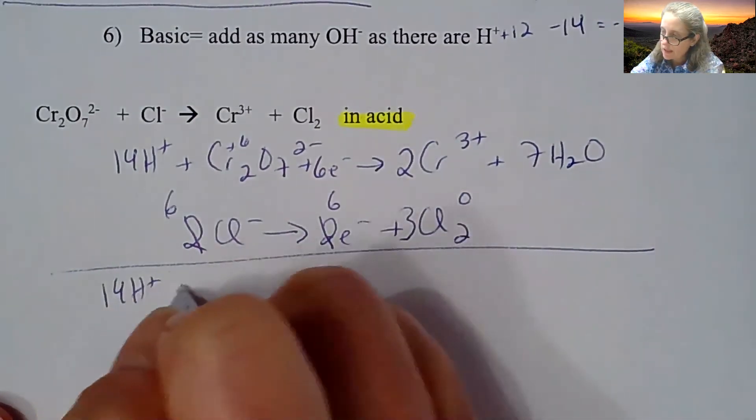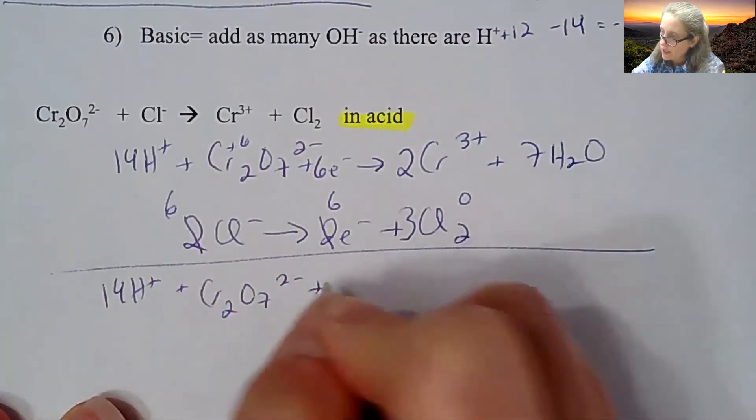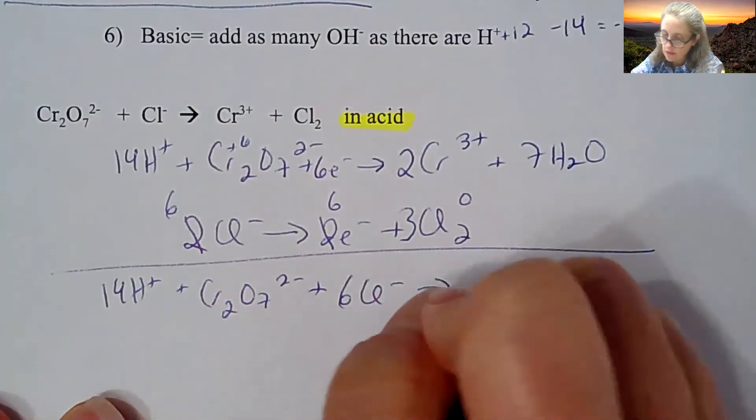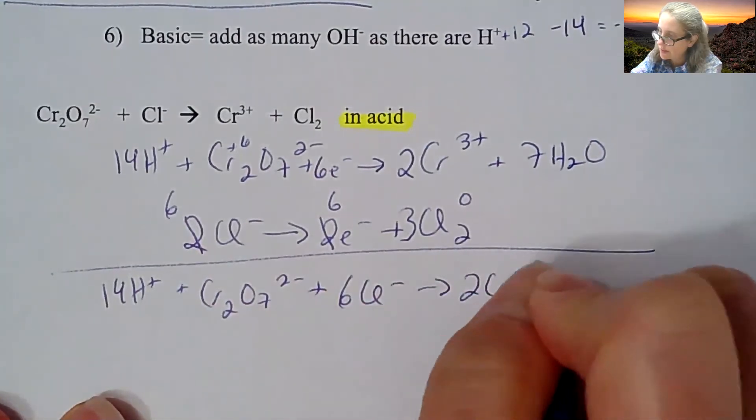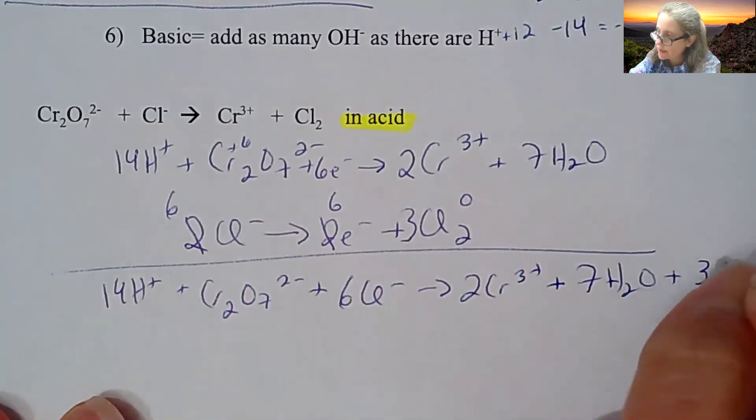So I have 14 H+ plus dichromate plus I have 6 Cl^- goes to 2 Cr^3+ plus 7 waters plus 3 Cl2.